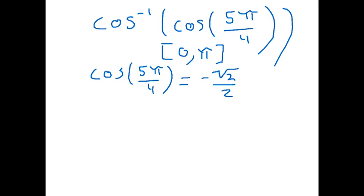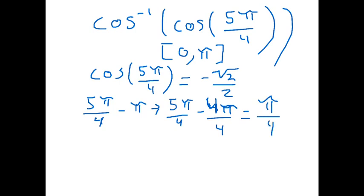So now we find the reference angle. In order to find this reference angle, we will take 5π over 4 and subtract π from 5π over 4. What you get is 5π over 4 minus 4π over 4, which equals π over 4. This is our reference angle right here.